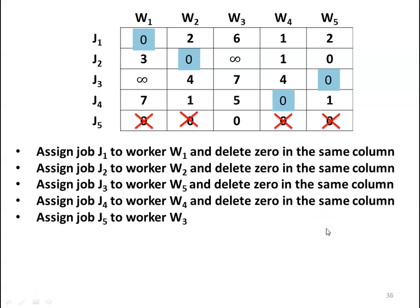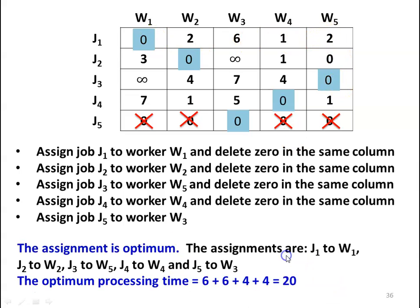Assign job J5 to worker W3. The optimum assignment is now complete. All jobs are assigned to all workers. The optimum assignments are: J1 to W1, J2 to W2, J3 to W5, J4 to W4, J5 to W3. The optimum processing cost equals 6 + 6 + 4 + 4 = 20.